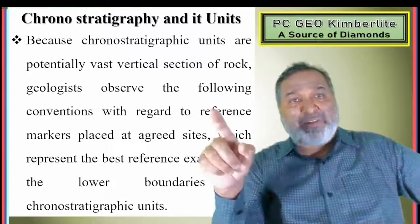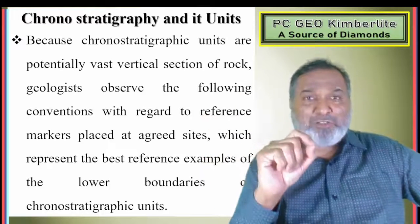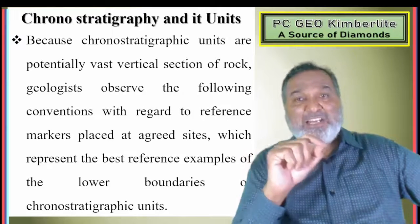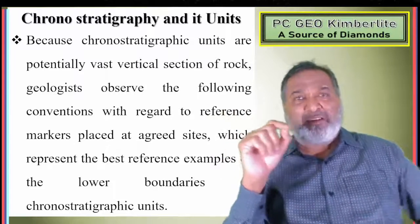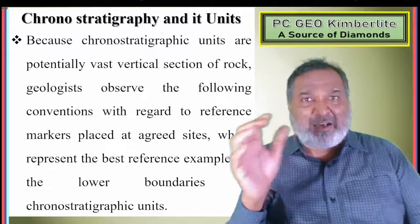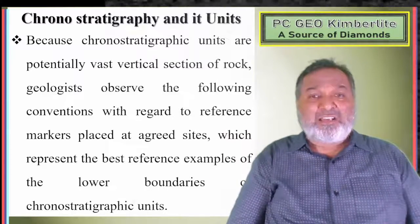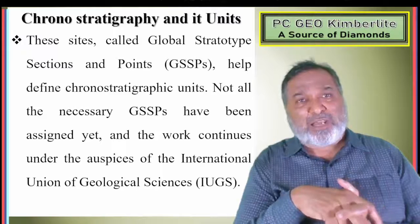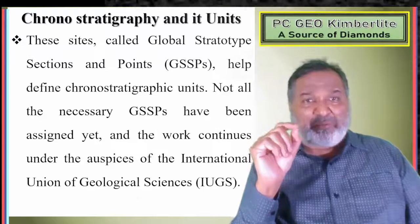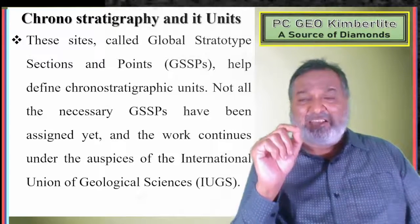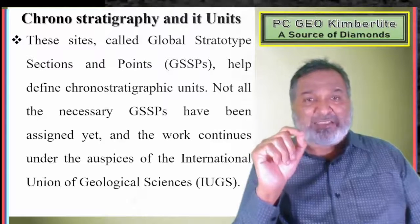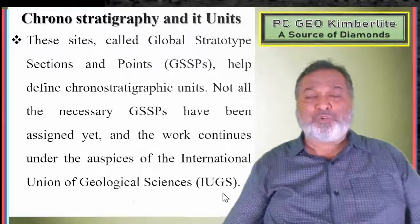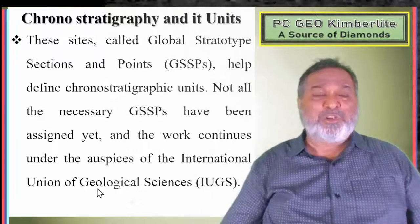Because chronostratigraphic units are potentially vast vertical sections of rock, geologists observe conventions regarding reference marker places at agreed sites — the lower boundaries of chronostratigraphic units. These sites, called Global Stratotype Sections or Points (GSSPs), help define stratigraphic units. Not all necessary GSSPs have been assigned yet, but work continues under the auspices of the International Union of Geological Sciences (IUGS).